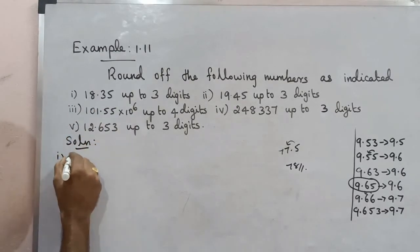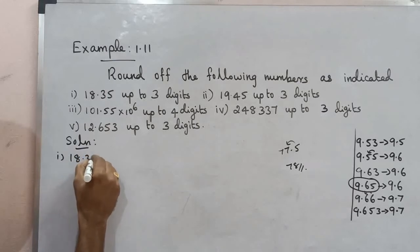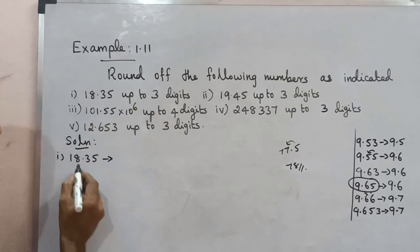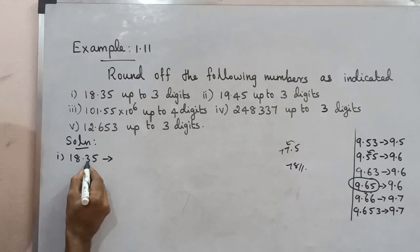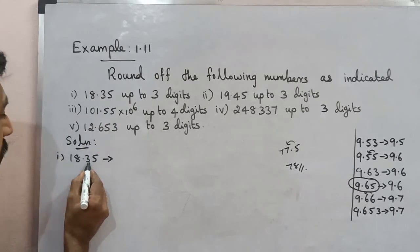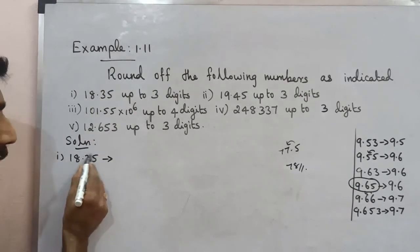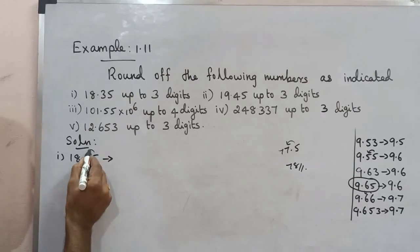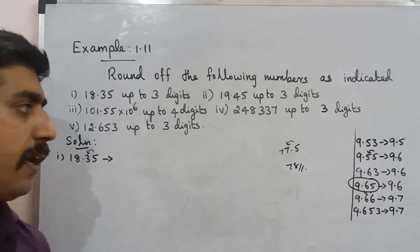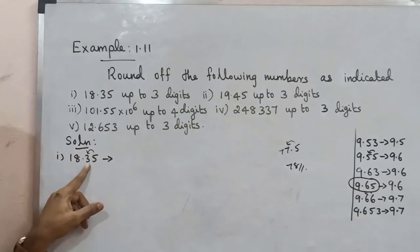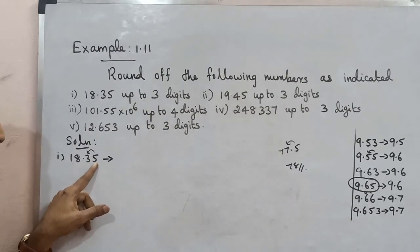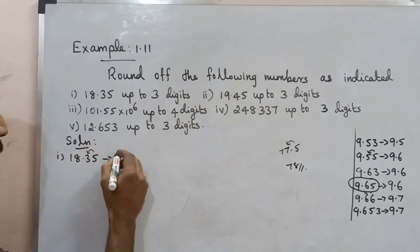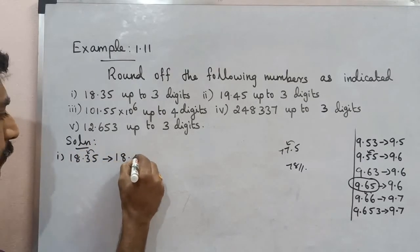Example 1: 18.35, round to 3 digits. Counting 1, 2, 3 — the third digit is 3. The last digit to be dropped is 5. Check the preceding digit: 3 is odd, so we add 1. Therefore 18.35 rounded to 3 digits is 18.4.